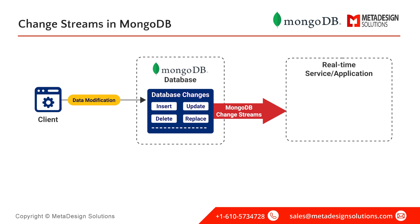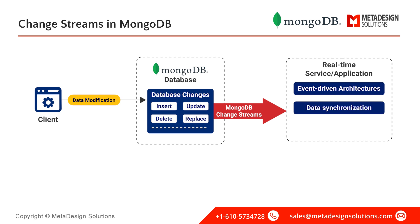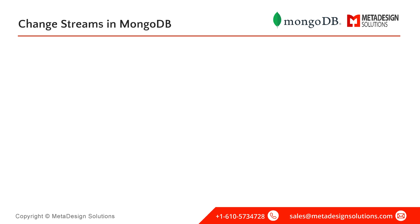Change streams are especially useful for event-driven architectures, where an action in the database triggers an external process; data synchronization, ensuring updates in MongoDB are reflected in other systems; and real-time analytics, where immediate insights are needed based on data changes.